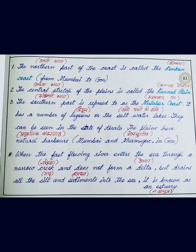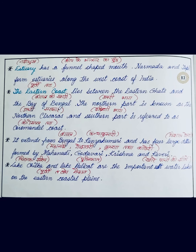An estuary has a funnel-shaped mouth — keep ke aakar ka mooh hota hai. You must have seen a funnel — keep — which is used to pour liquids into bottles. The Nadi Mukh, the estuary, has a similar funnel shape. Narmada and Tapi rivers form estuaries along the west coast of India — they form Nadi Mukh on the western coast — and that is why I was telling you about estuaries.